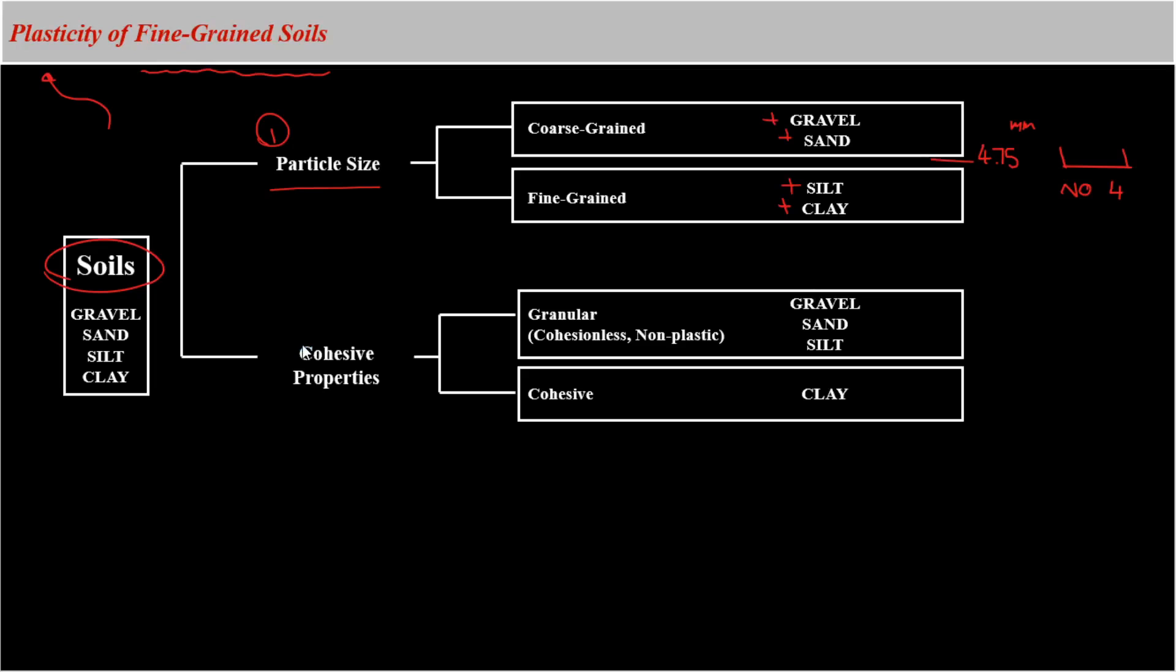The second generic way to classify soils is based on their cohesive properties, or based on how the soil reacts with water. In this type of soil classification, we have granular soils that are gravel, sand, and silt, and we have cohesive soils that only include clay. So, you may ask, why do we have this type of soil classification?